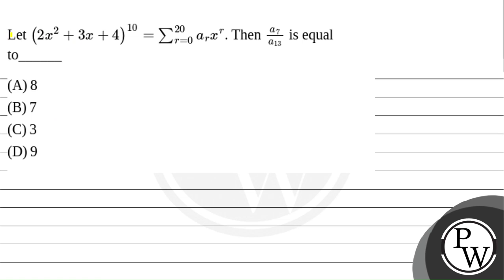Hello bachcho. In this question it is given that let (2x² + 3x + 4)^10 equals summation r equal to 0 to 20 of aᵣ xʳ. Then a7 by a13 equals which of the following values.